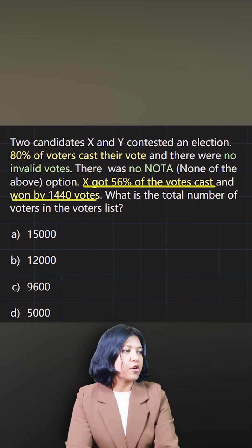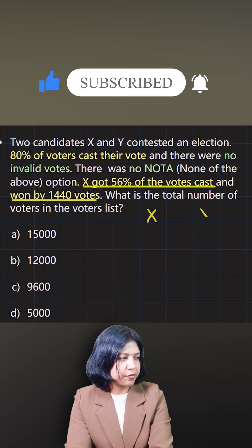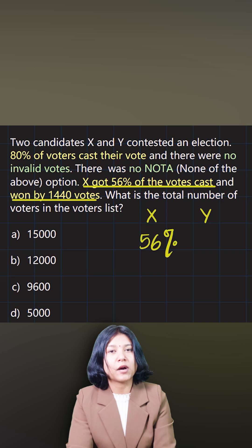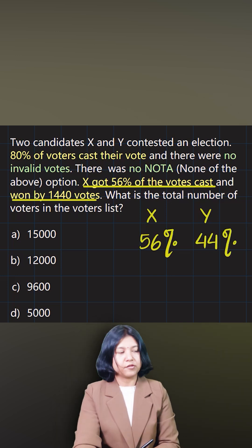What we'll do is make a quick column. X has got 56%, so what percent will Y get? The remaining, which is just 44%.